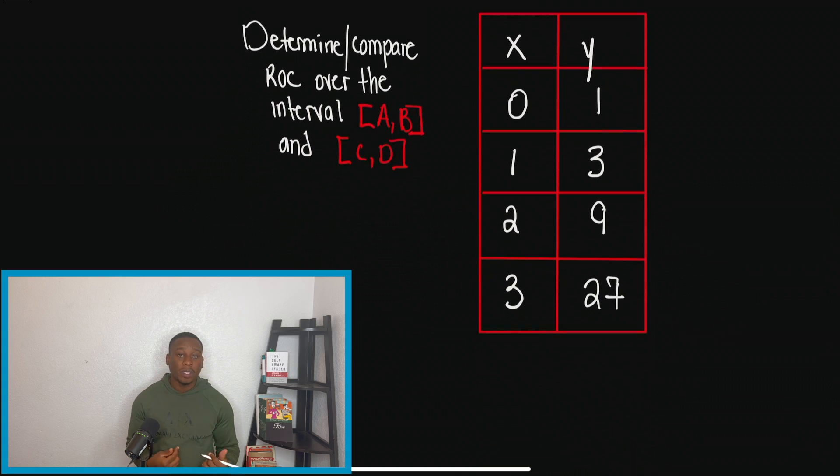So in the table here, they don't label anything for us, but they told us that they want us to determine the interval for A, B, and C, D. So two things. One, we should assume, even though more than likely it will be labeled, that this is an alphabetical order, A, B, C, and D.